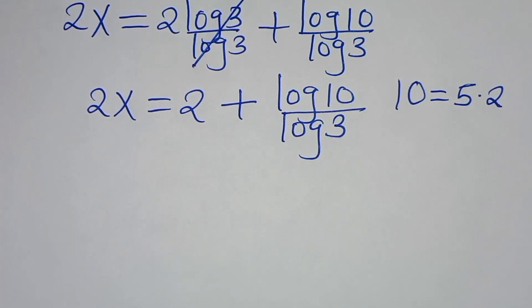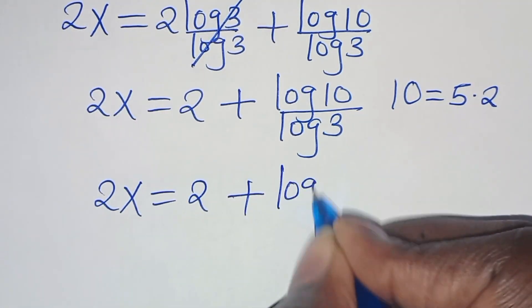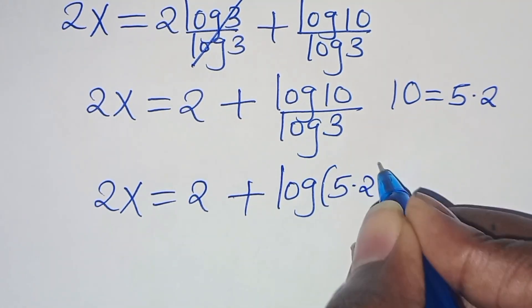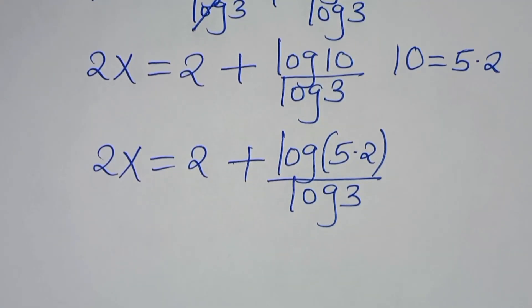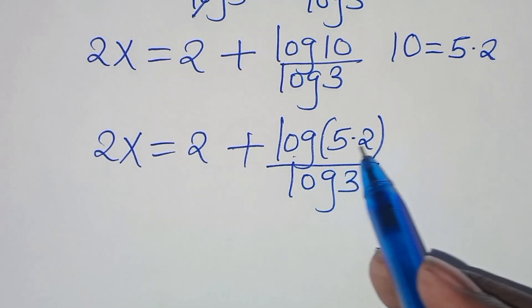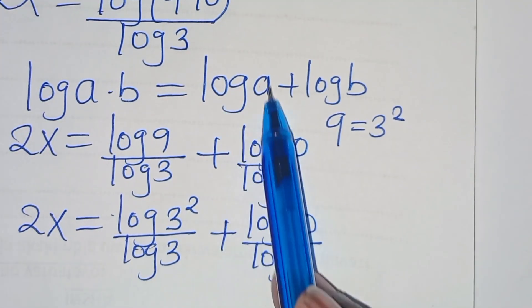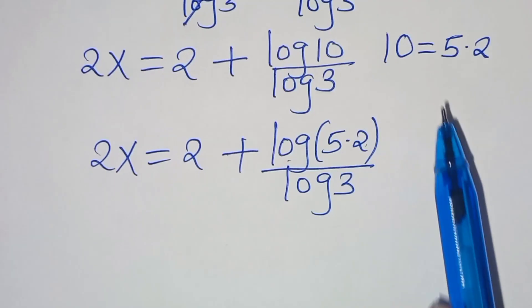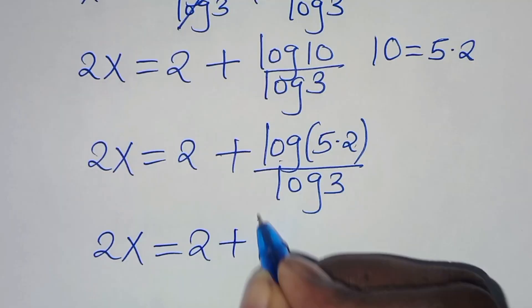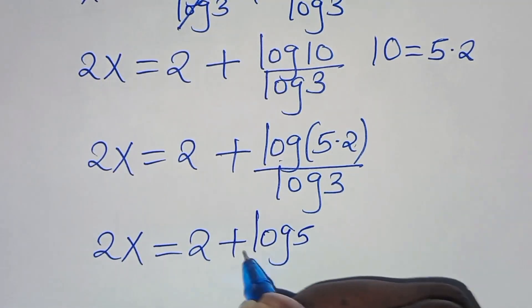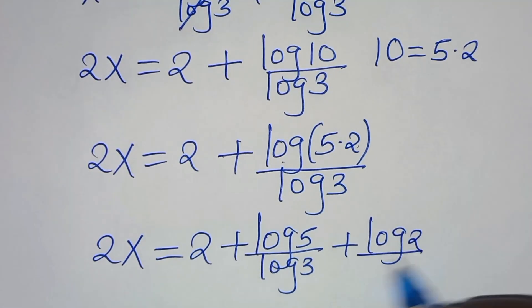We can express 10 as 5 times 2. Log(5 times 2) is in the form of log(a times b), which we can express as log a plus log b. So we have that 2x is equal to 2 plus log 5 over log 3, then plus log 2 over log 3.